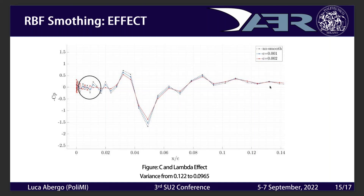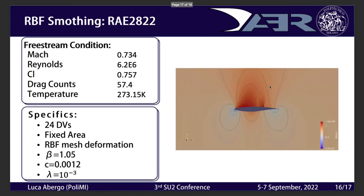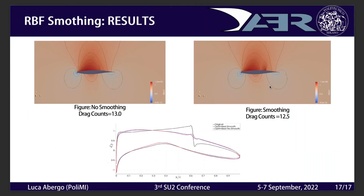The target is to cancel oscillations while keeping the general information that the sensitivity provides in a given region. We applied this to the RAE 2822 airfoil in transonic conditions, with one FFD box and 24 design variables, always preserving lift. Beta is set to 1.05, c to 1.2 millimeters, and lambda to 10⁻³. The impact on shape optimization is not large — a reduction of only 0.5 drag counts — but the minimum is reached 10 iterations earlier, and the final pressure coefficient distribution is very similar. We need more tests to understand the full impact on optimization.